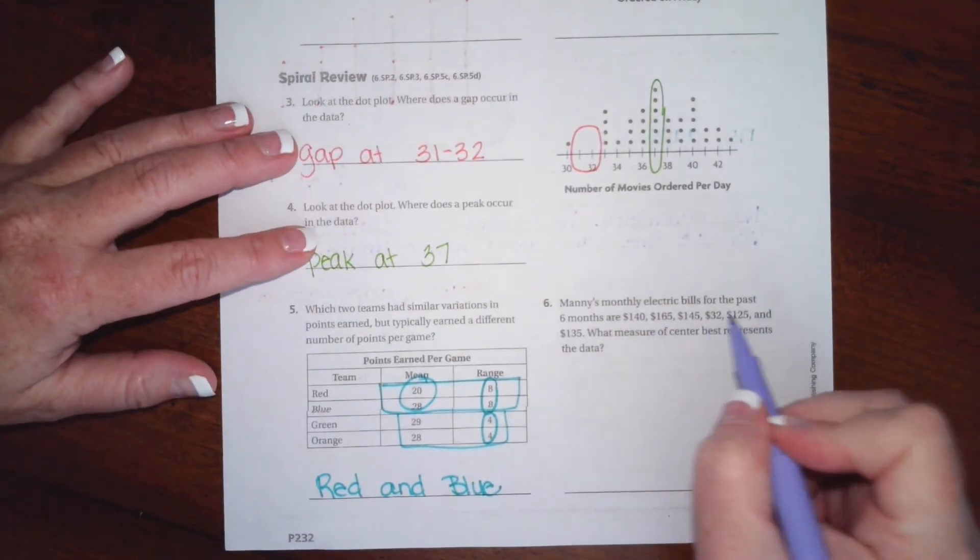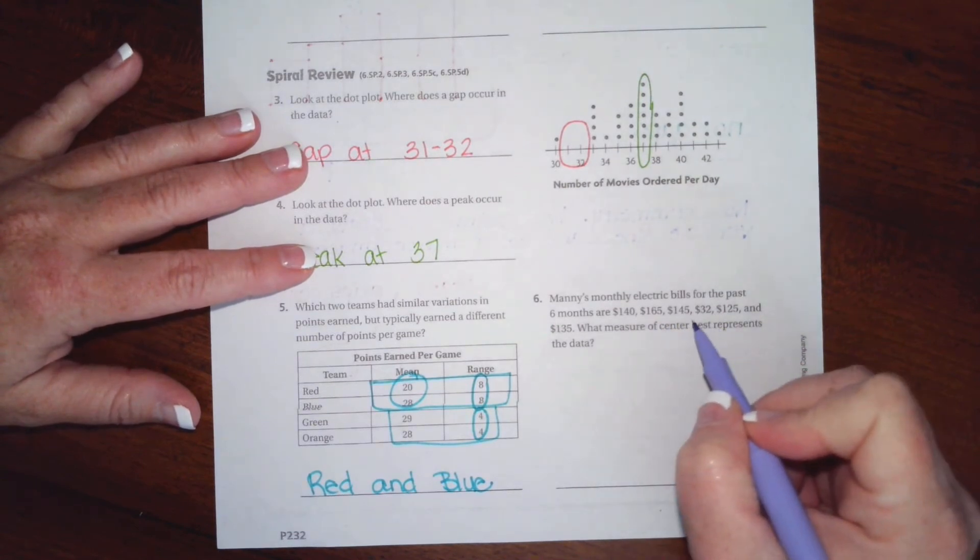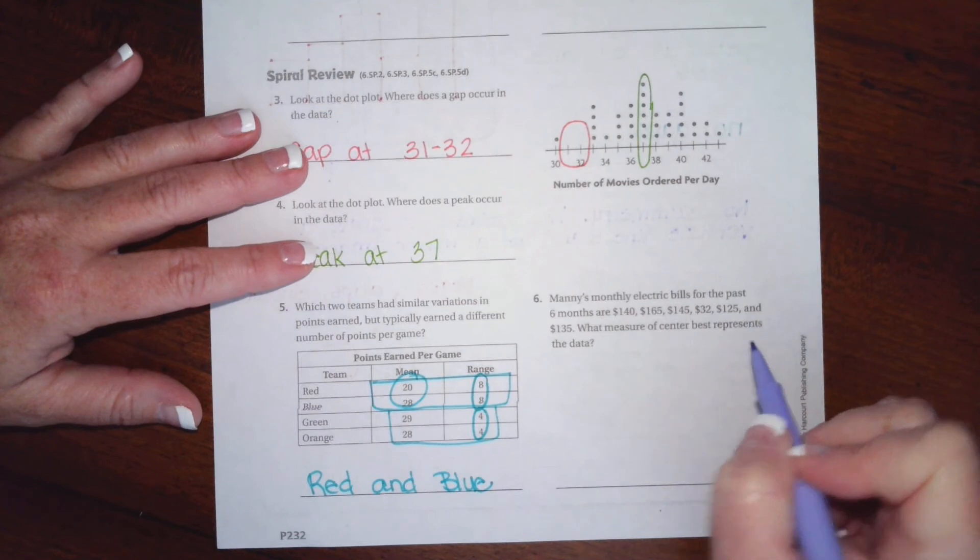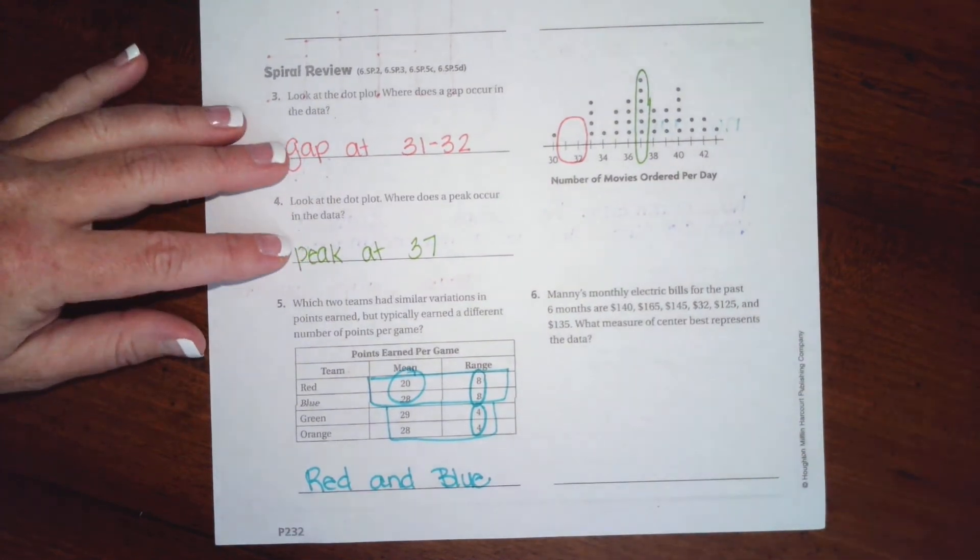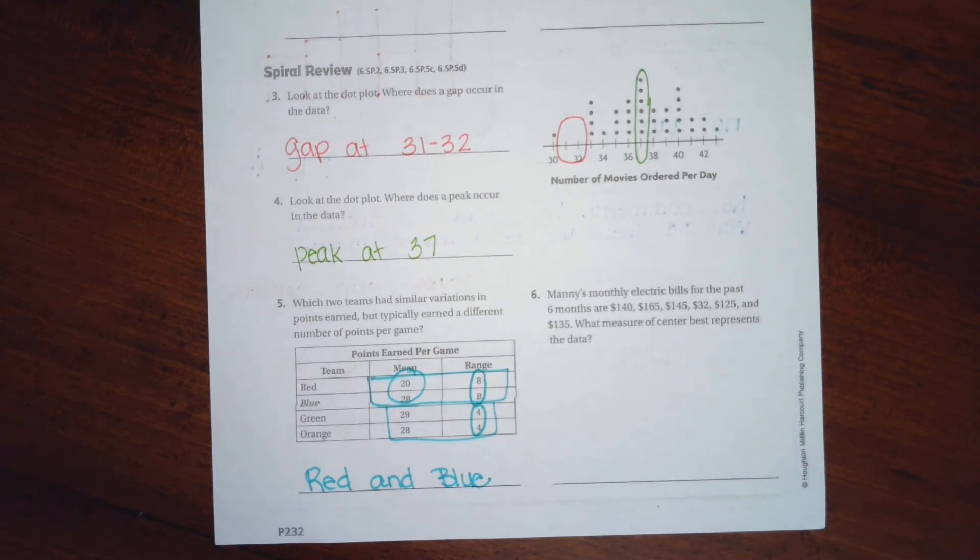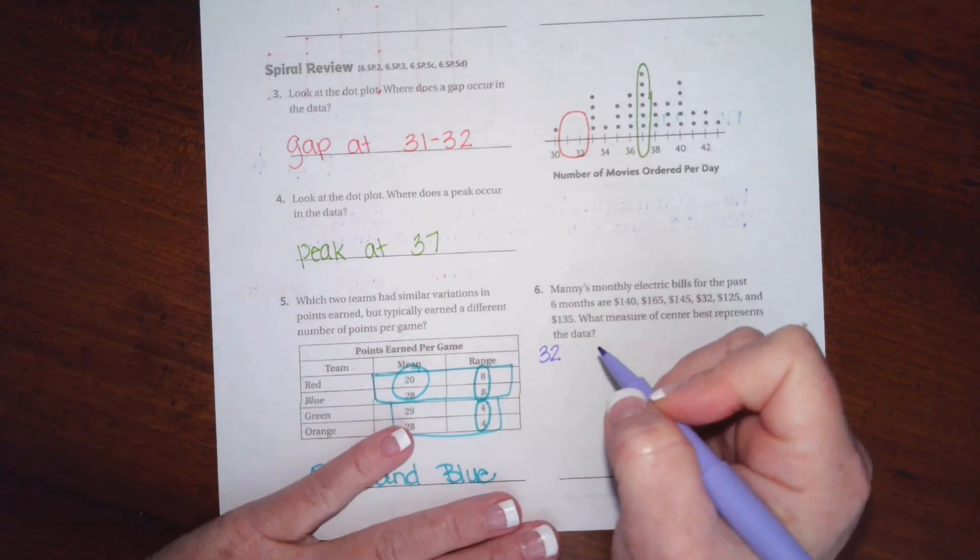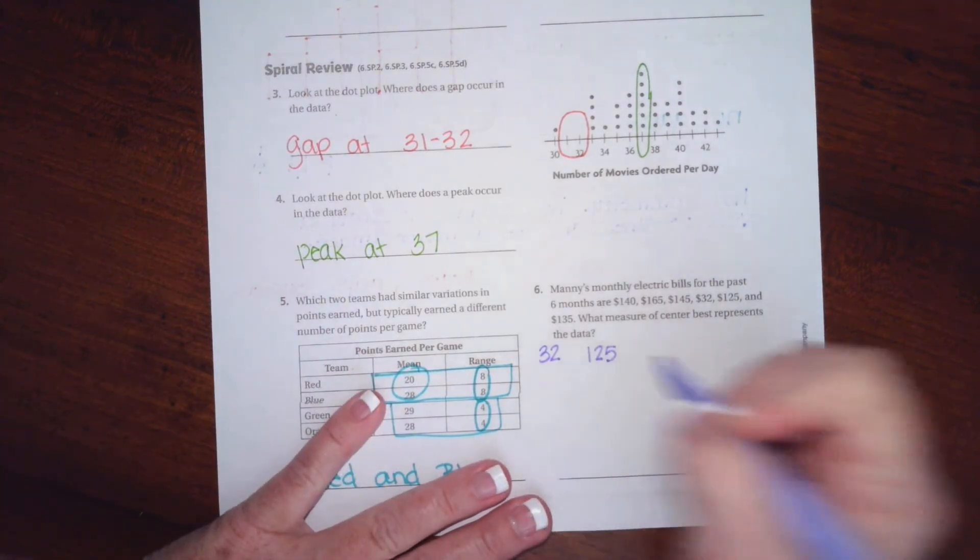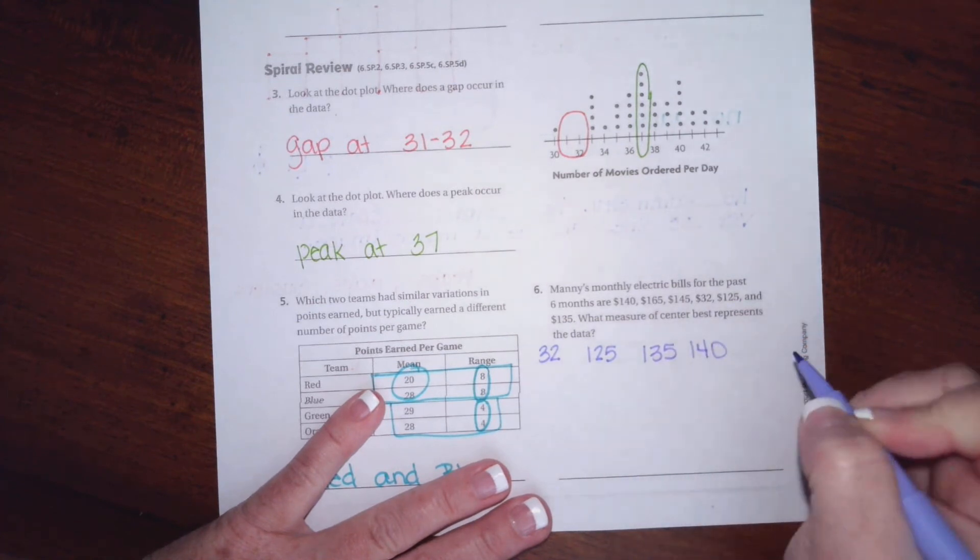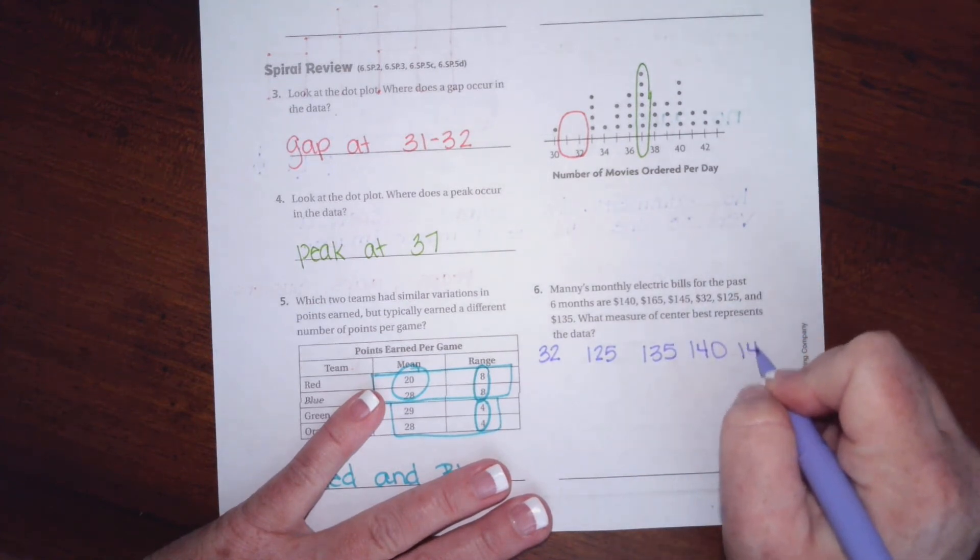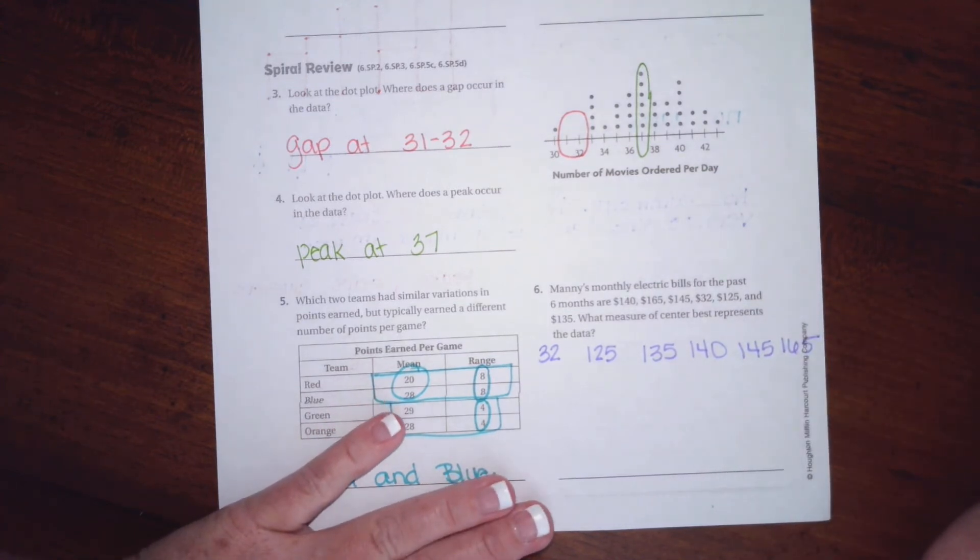All right guys. Manny's monthly electric bills for the past six months are $140, $165, $145, $32, $125, and $135. What measure best represents the data? So first I'm going to go ahead and write them in order. So we have $32, $125, $135, $140, $145, and $165.